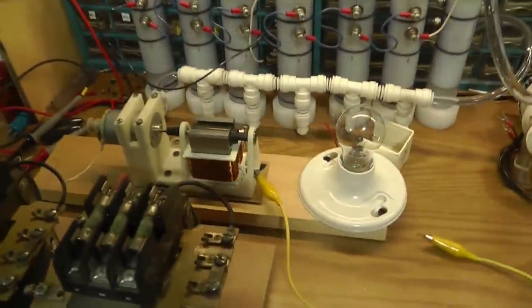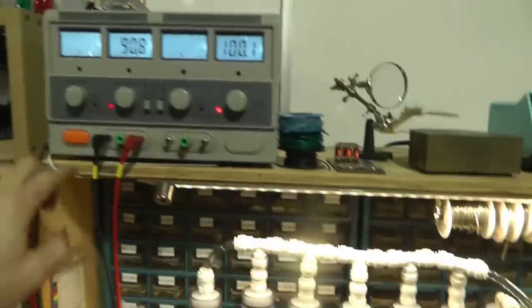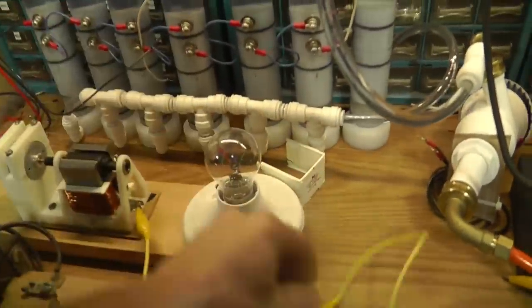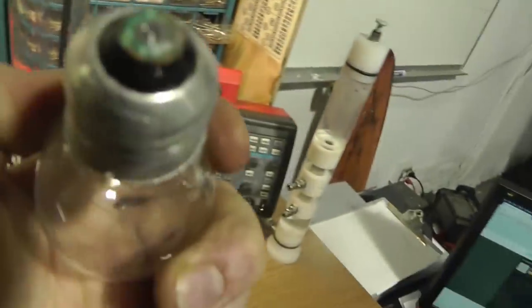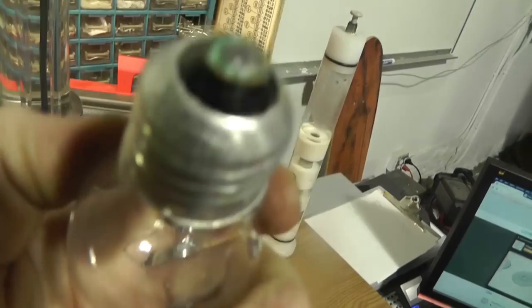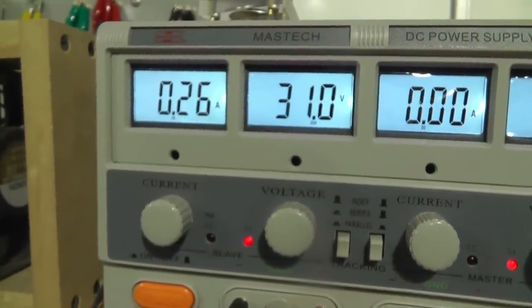Alright, doing a little test. I've got my setup here, got my motor connected to a power supply here. And what I'm going to do is show an open condition, shorted condition, and a 60 watt light bulb condition. Turning this on, turn it all the way up. There's an open condition.